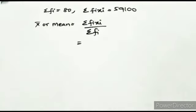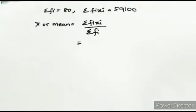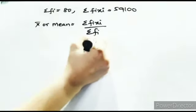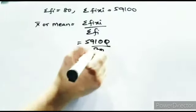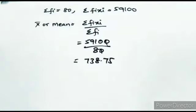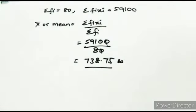Now substitute this value into the formula. The board is small so I had to erase — if you want, go back in the video and copy it. Σfi·xi = 59100, so mean = 59100 / 80 = 738.75. Therefore, the mean daily wages of the workers is 738.75 rupees.